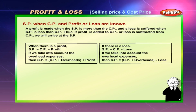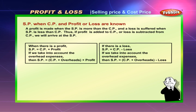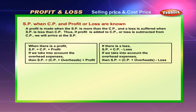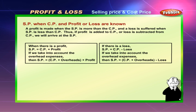A profit is made when the selling price is more than the cost price, and a loss is suffered when the selling price is less than the cost price. When there is a profit: selling price equals cost price plus profit. Taking overhead expenses into account: selling price equals cost price plus overheads plus profit. When there is a loss: selling price equals cost price minus loss. Taking overheads into account: selling price equals cost price plus overheads minus loss.